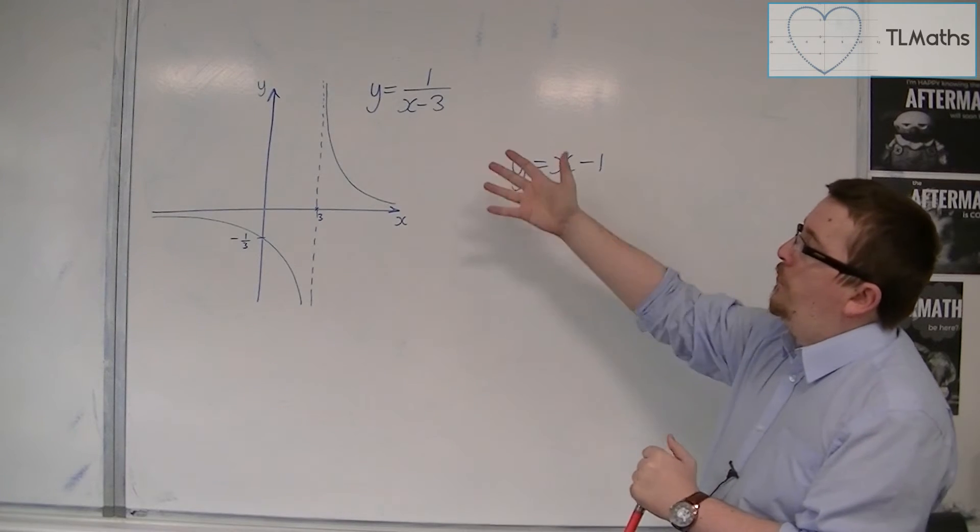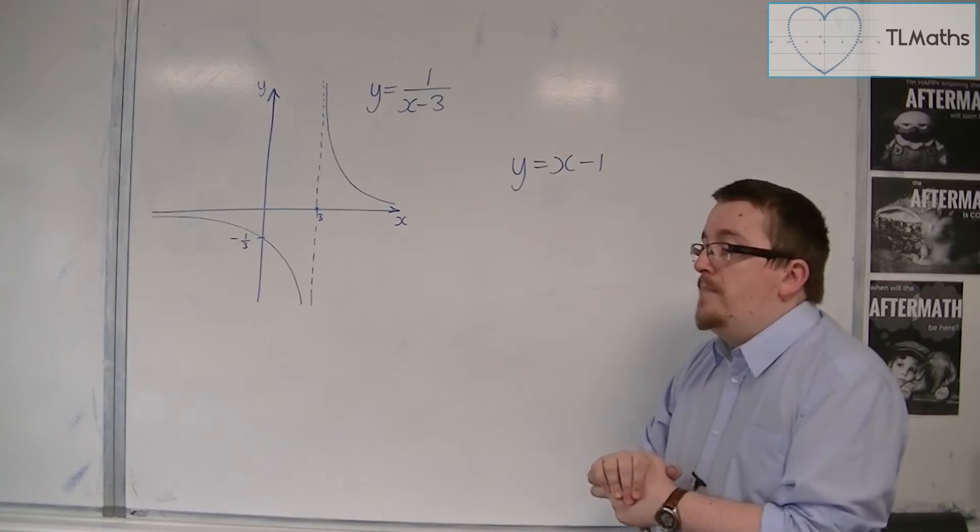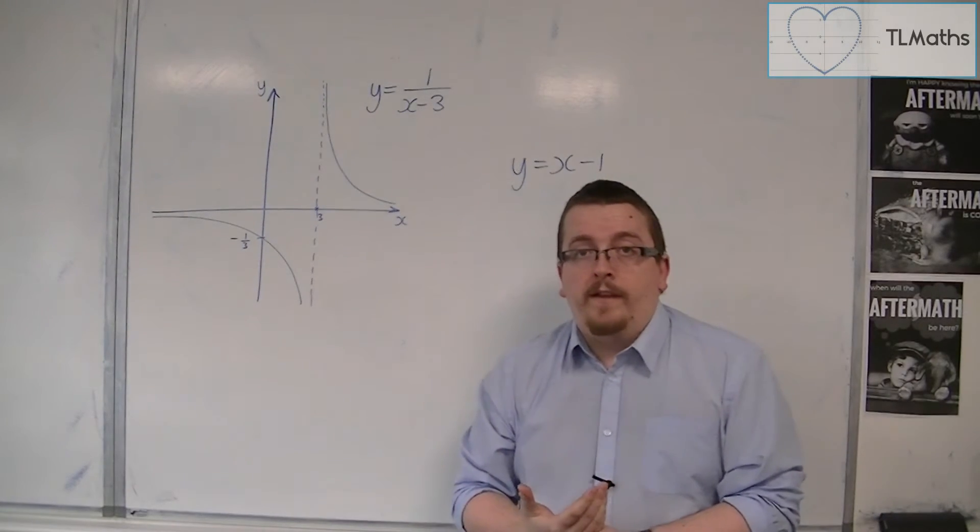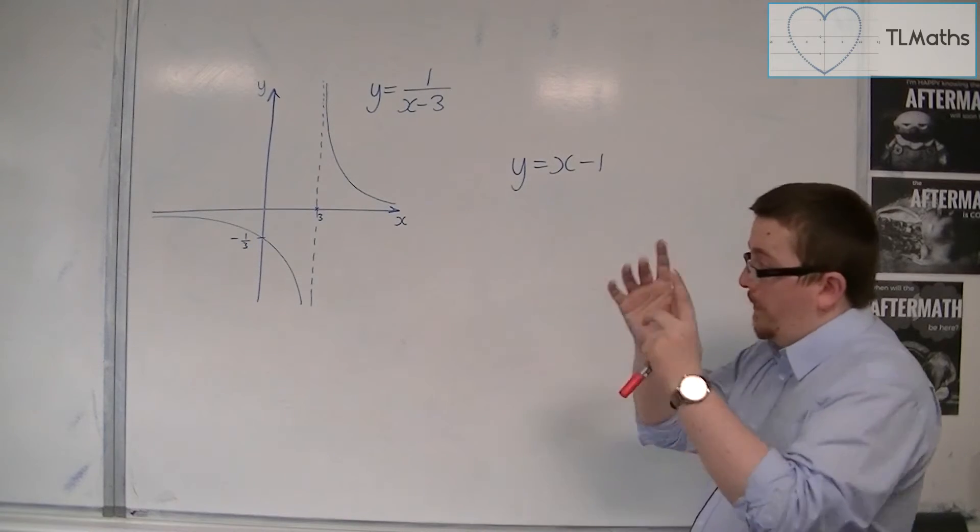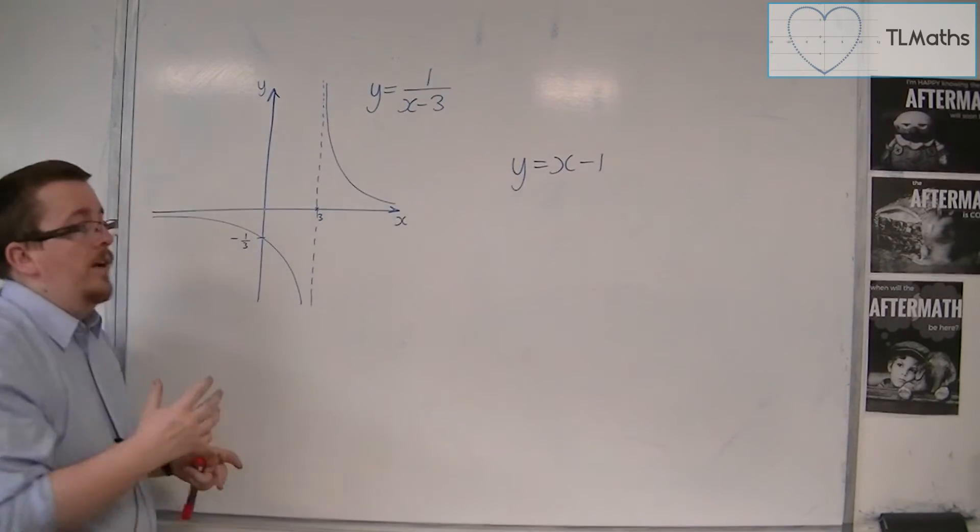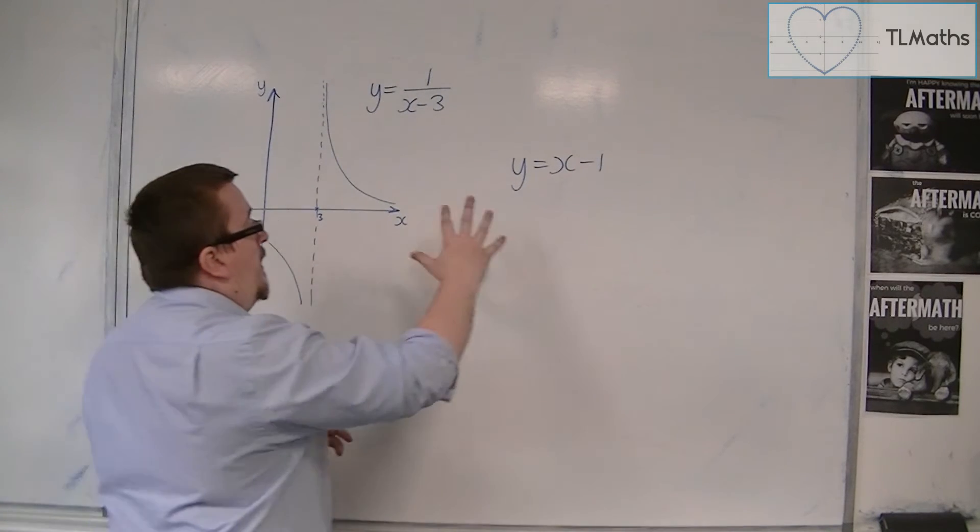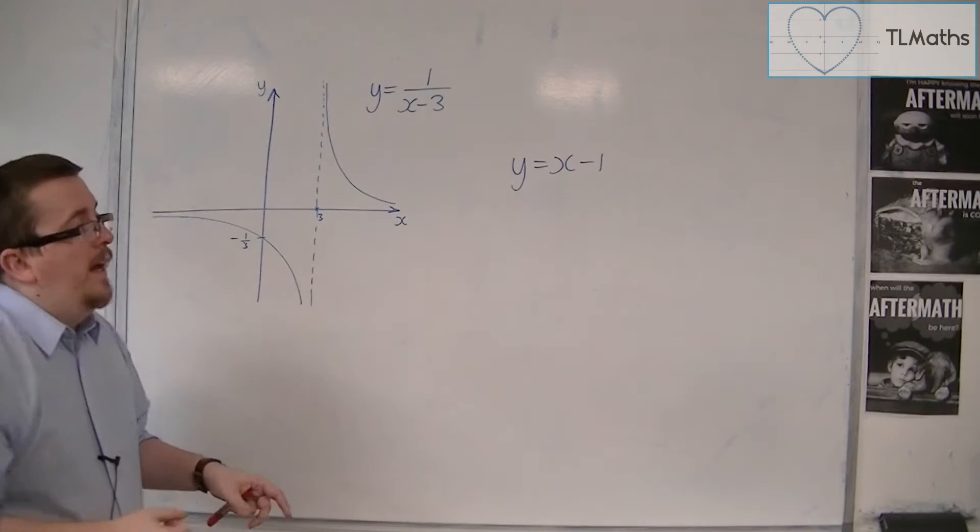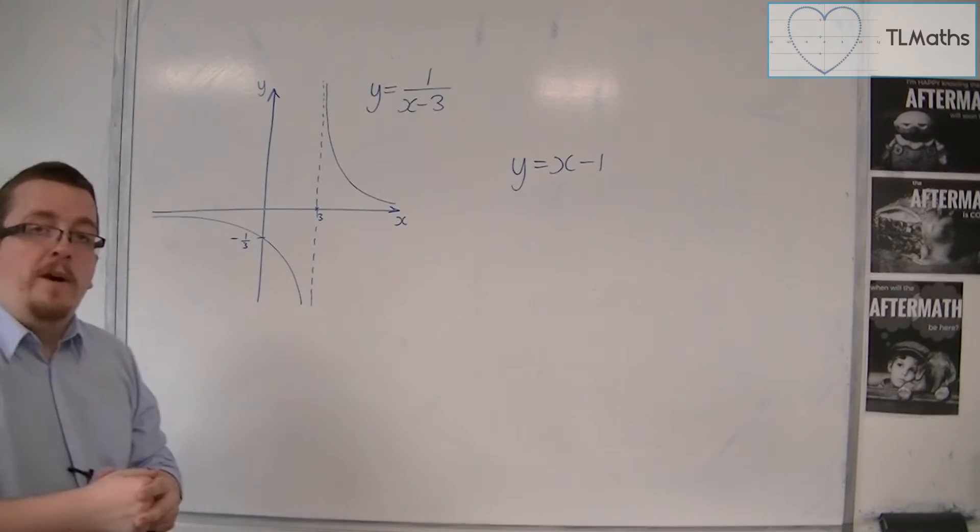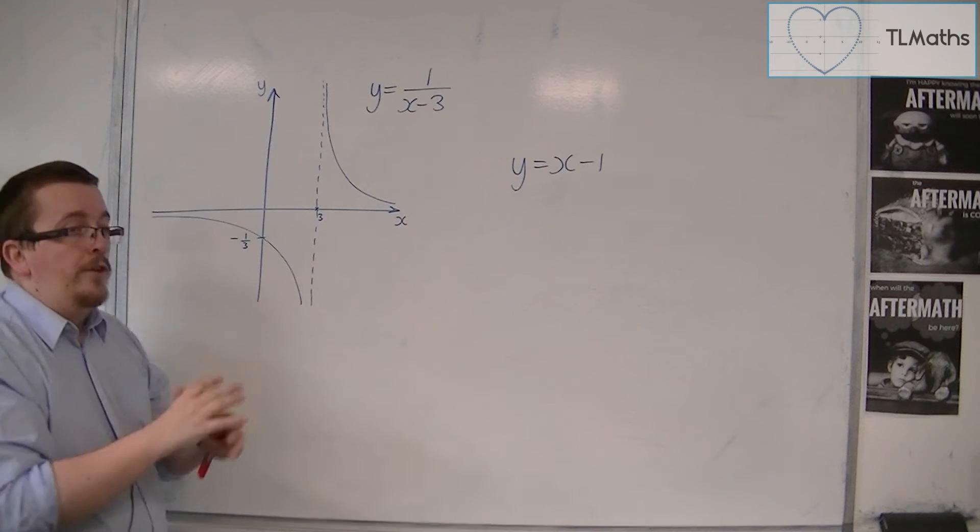So here is y equals 1 over x minus 3, for example. And you might be given an accurate graph of this, drawn on proper squared paper. And you're then asked to draw accurately another line, or it might be a curve. In this case we've got y equals x minus 1. We're going to draw y equals x minus 1 onto this, and then we're going to look for a solution.